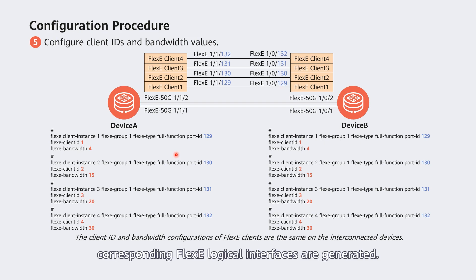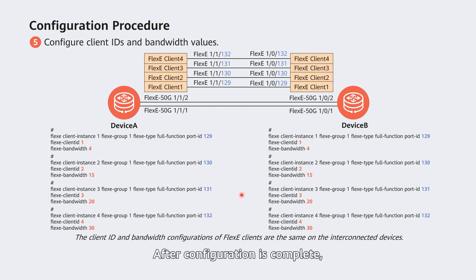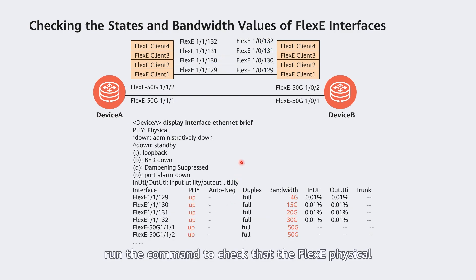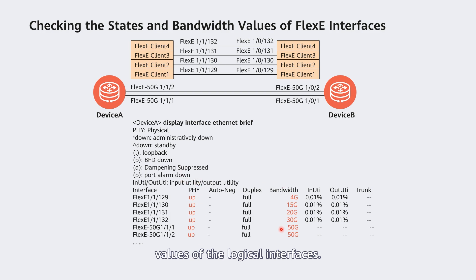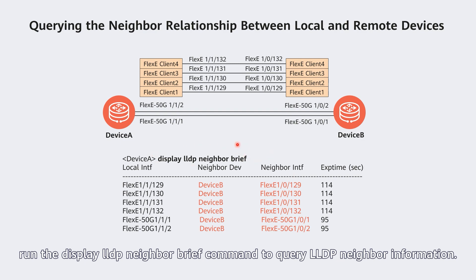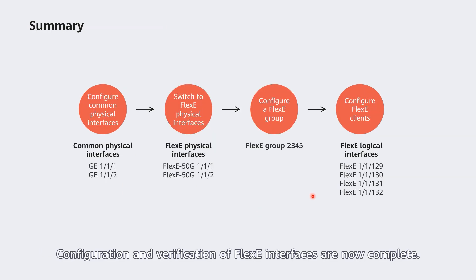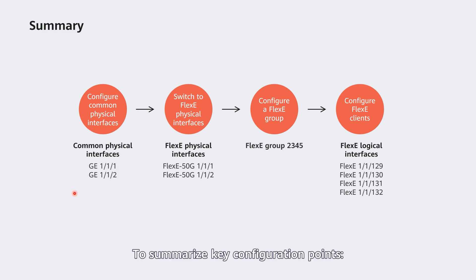After configuration is complete, corresponding flexi logical interfaces are generated. The first two digits of each interface number are the same as those of the corresponding flexi physical interface, and the third digit is the configured interface ID. Run the command to check that the flexi physical and logical interfaces are up and obtain the bandwidth values of the logical interfaces. In addition, run the 'display lldp neighbor brief' command to query LLDP neighbor information and view the neighbor relationship with the remote device. Configuration and verification of flexi interfaces are now complete.